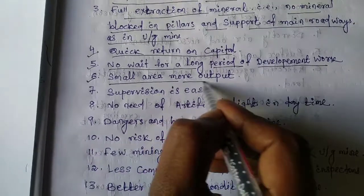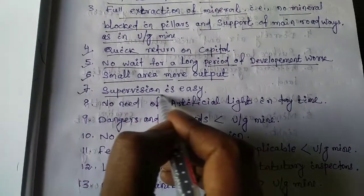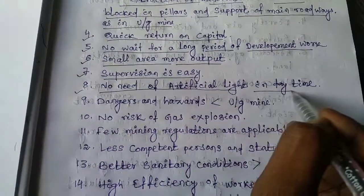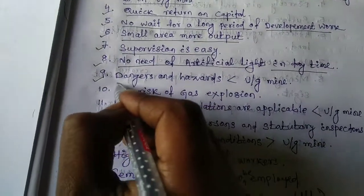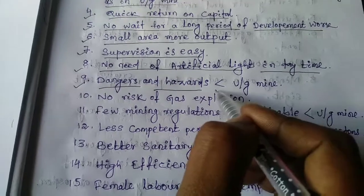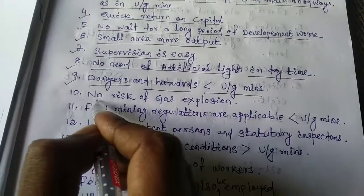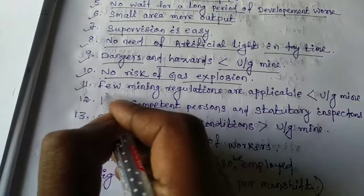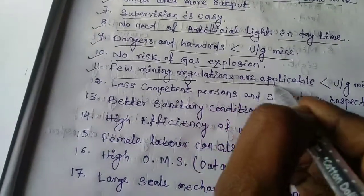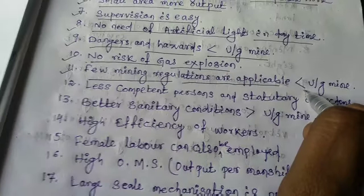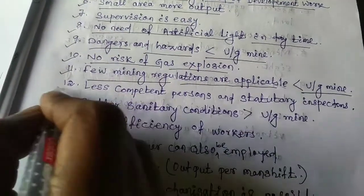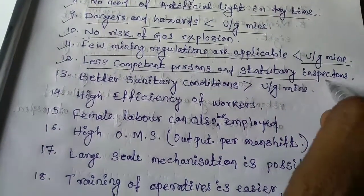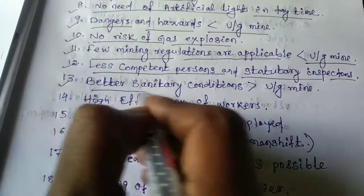Fifth, no wait for long period of development work. Sixth, small area and more output. Seventh, supervision is very easy. Eighth, no need of artificial light in daytime. Ninth, dangers and hazards are less than underground mine. Tenth, no risk of gas explosion. Eleventh, few mining regulations are applicable than underground mine.